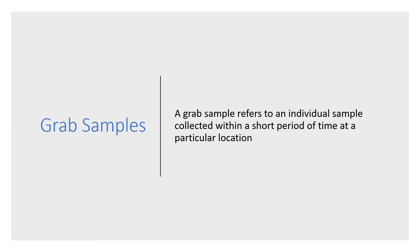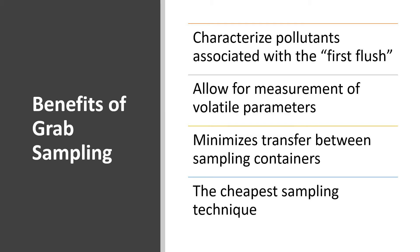The results of a grab sample generally are not sufficient to develop a reliable estimate of the event mean concentration for the pollutant load, because stormwater quality tends to vary dramatically during a storm event. However, grab sampling has an important role in many stormwater monitoring programs. A single grab sample collected during the first part of a storm can be used to characterize pollutants associated with the first flush.